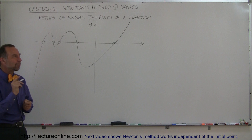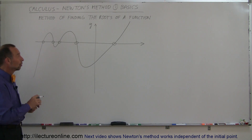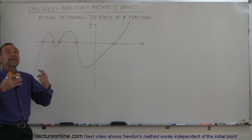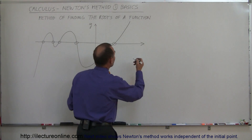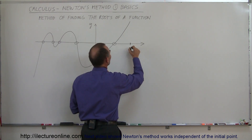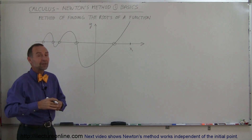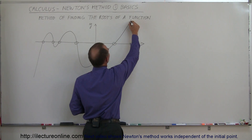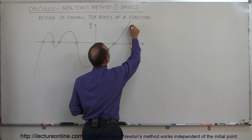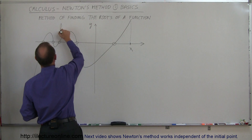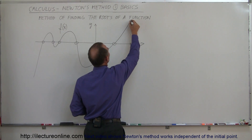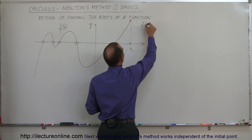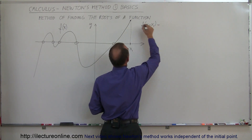It was hard for Newton as well, but he came up with a very ingenious way to find these roots. Let's say you have no idea what they may be, so you purely take a guess — pick a value for x that might be somewhere close to a root. Let's say we pick this value right here and call that x₁. We evaluate the function at that value.